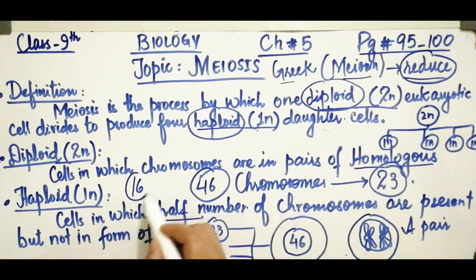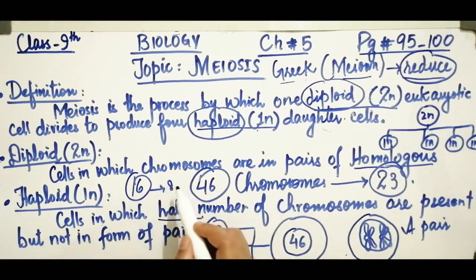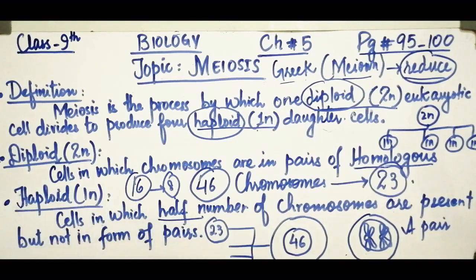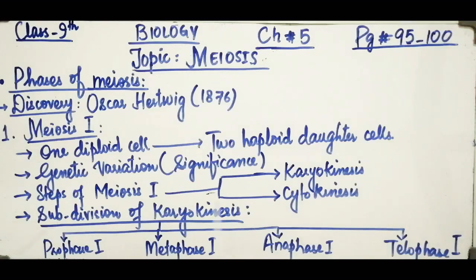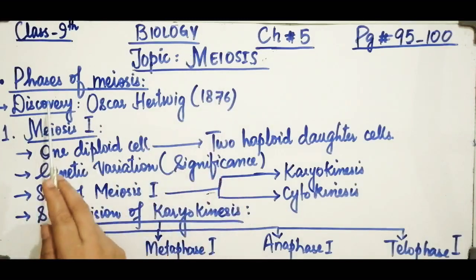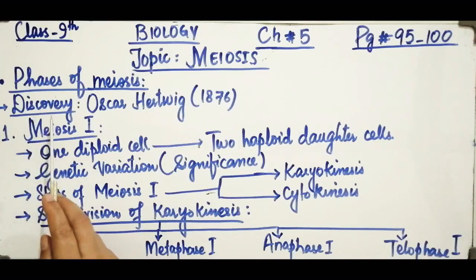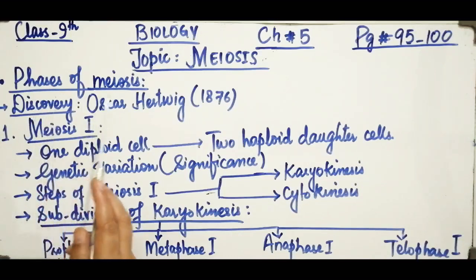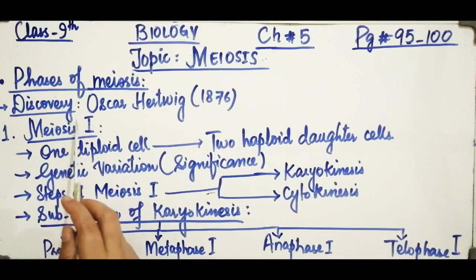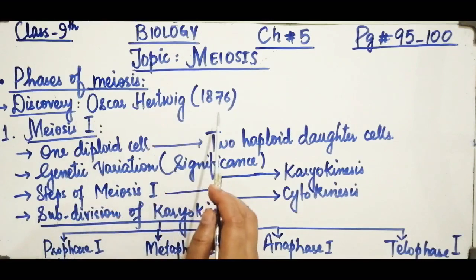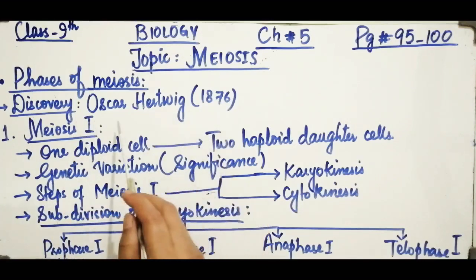So if you have 16 chromosomes in diploid, the haploid number would be 8. Diploid means the original number of chromosomes present in homologous pairs, and haploid means half that number without homologous pairs. The next heading is phases of meiosis. Meiosis was first discovered and described by a German biologist, Oskar Hertwig, in 1876.